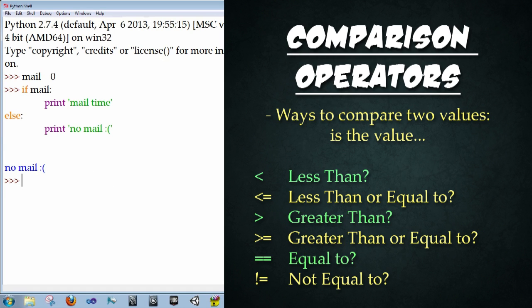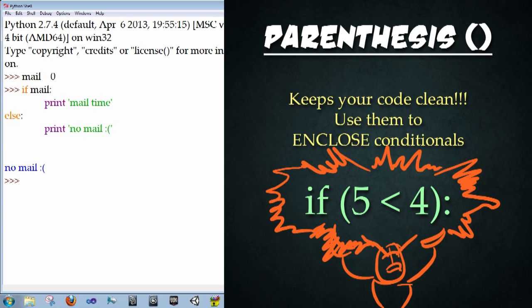Great job. Next we're going to begin using operands, which are simple ways of checking or comparing two different values. We're going to use parentheses to enclose all our operand operations. This is a way of keeping your code clean and it makes it much easier to debug later on.